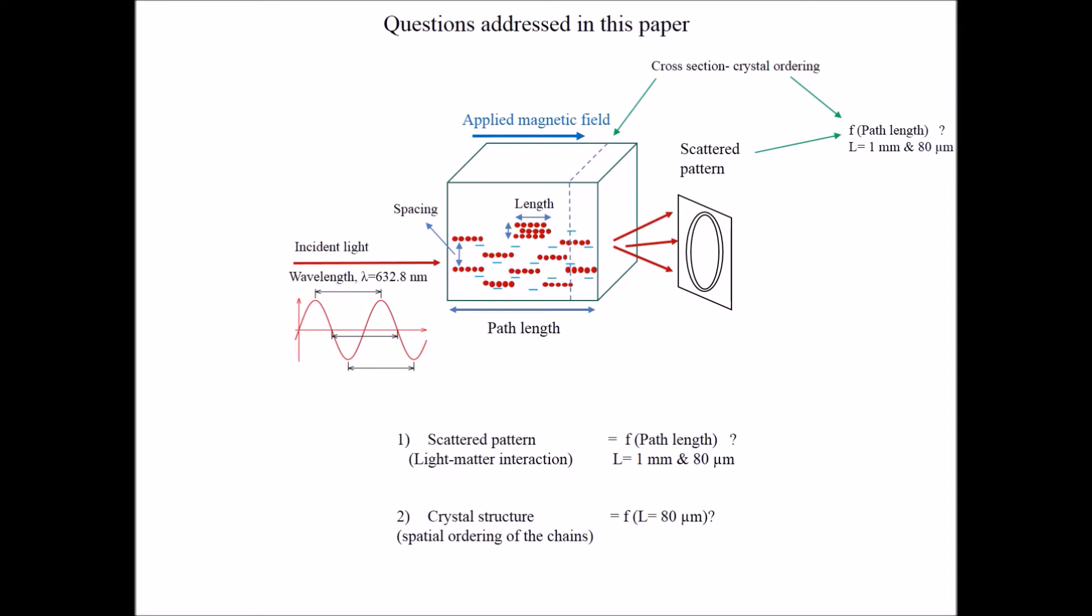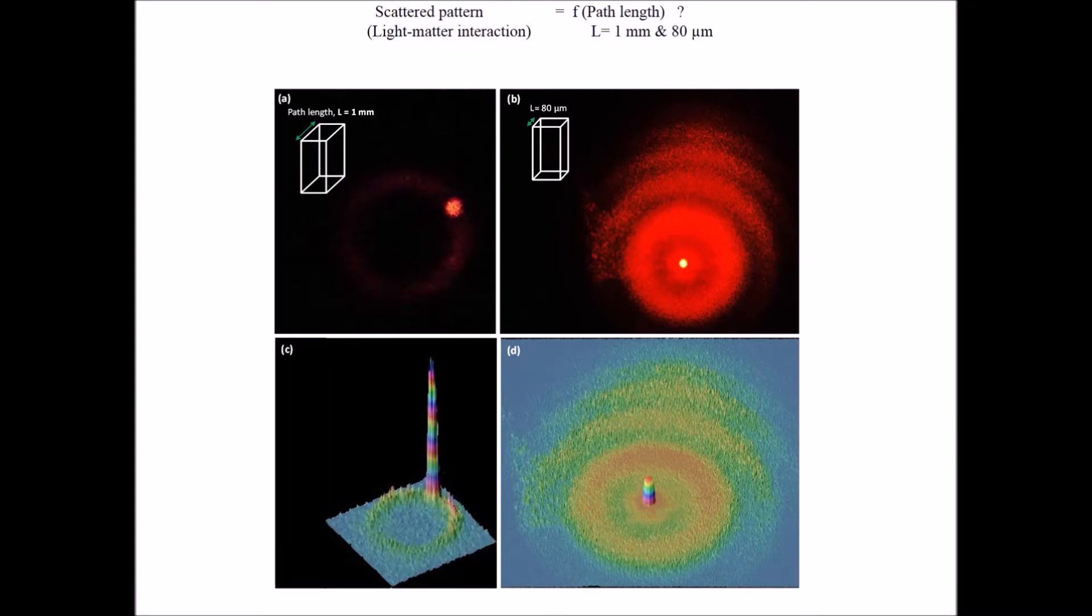For the longer path length of 1 mm, we observe a single conic light scattered ring with the laser spot on the ring circumference. However, for the shorter path length of 80 micrometer, we observe concentric diffraction rings with the laser spot at the ring center.